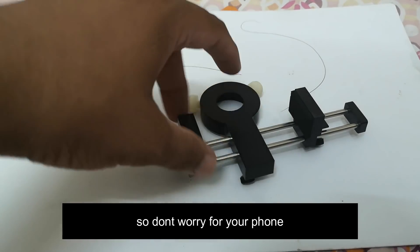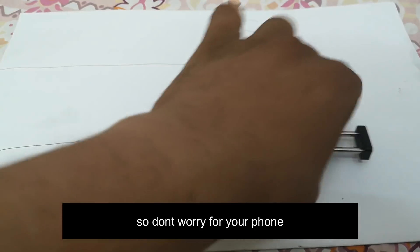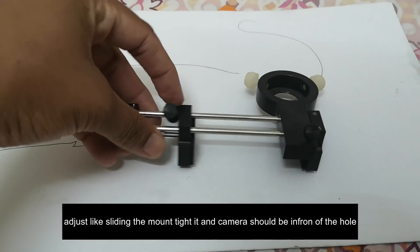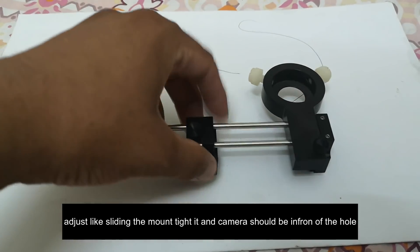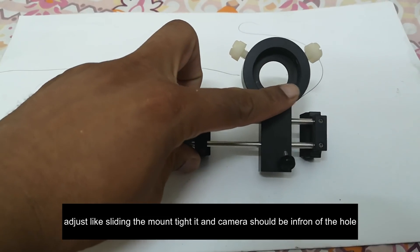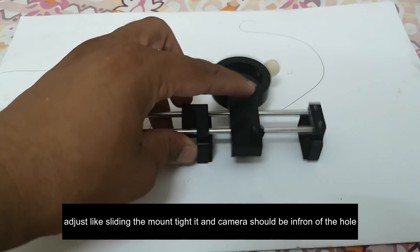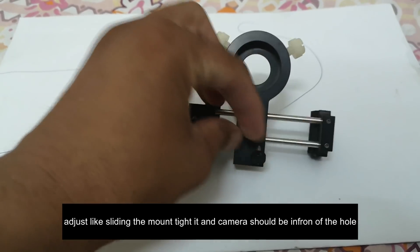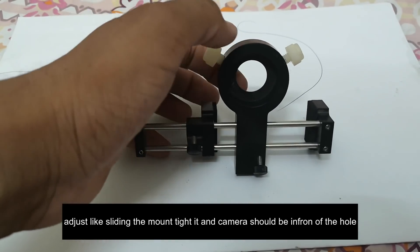So don't worry for your phone, your phone will not be damaged. And it works this way, you tighten it with the phone size and then adjust by sliding the mount and then tighten it, and your camera should be in front of the hole.